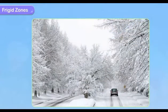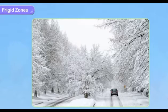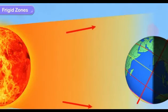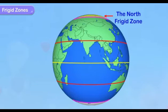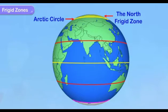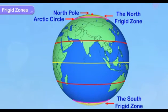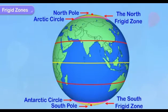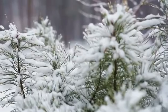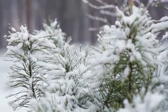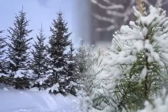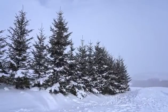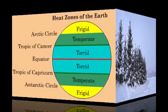In the frigid zone, the rays of the sun fall extremely slanting which do not bring much heat to this zone. The north frigid zone lies between the Arctic Circle and the north pole, while the south frigid zone lies between the Antarctic Circle and the south pole. So the regions of frigid zone are the coldest and remain frozen for most part of the year.